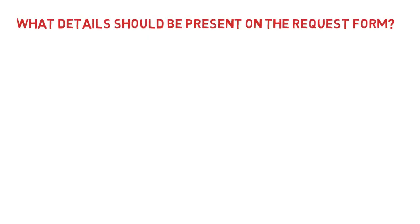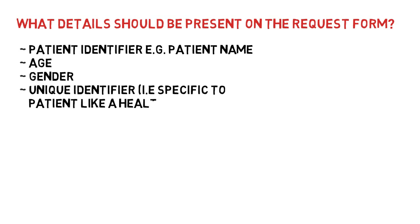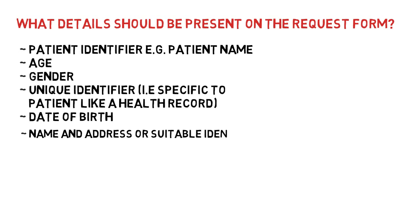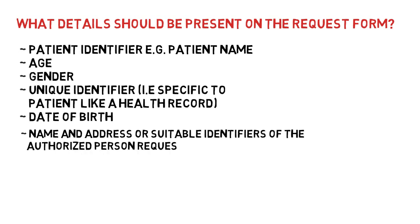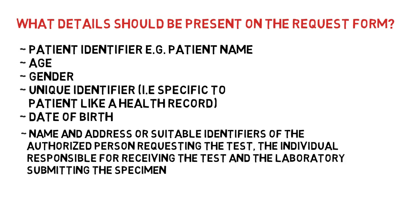What details should be present on the request form? This is how a request form looks like. It must have patient identifiers like the patient's name, age, gender, a unique identifier specific to the patient such as a health record number, date of birth, and the name and address or suitable identifiers of the authorized person requesting the test, the individual responsible for receiving the test results, and the laboratory submitting the specimen.